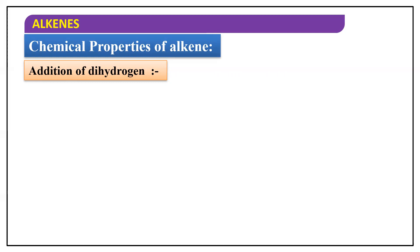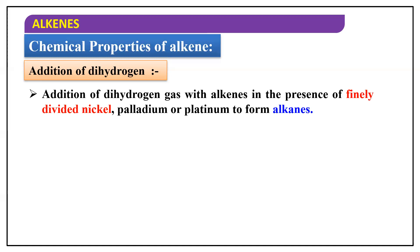The first reaction is called addition of dihydrogen. As the name indicates, we add hydrogen in the presence of finely divided nickel — nickel in its powdered form — which increases the surface area of the catalyst and thereby its efficiency. We can also use palladium or platinum to convert an alkene into an alkane. Addition of hydrogen is also called reduction, so these reagents can be considered reducing agents.